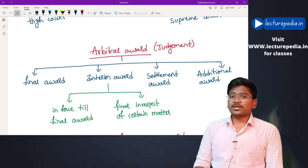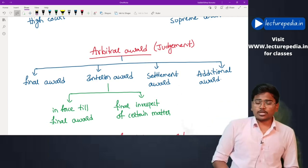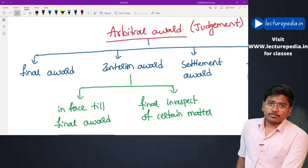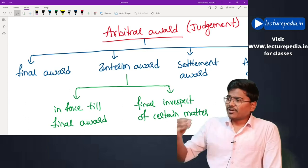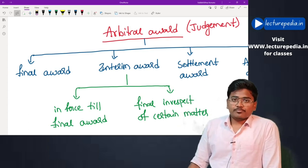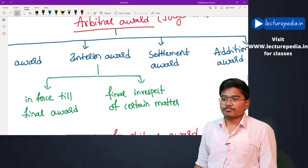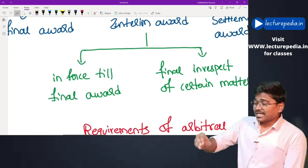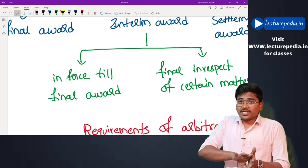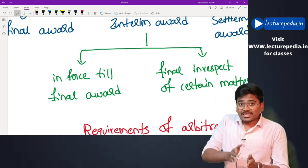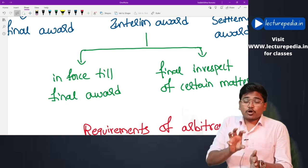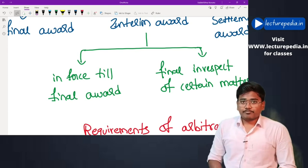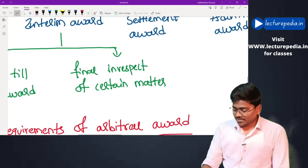The arbitral award is the judgment given by the arbitrator. It is of four types. First is a final award — once the entire proceedings are completed, the final judgment given by the arbitrator is the final award. Second is an interim award — since giving the final order may take considerable time, an interim award can be granted by the arbitrator in the meantime.